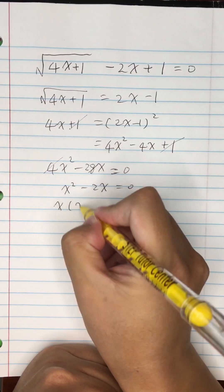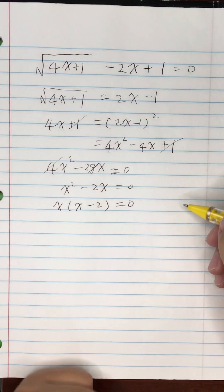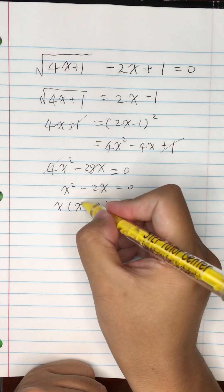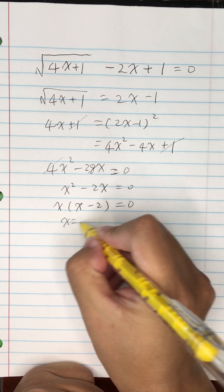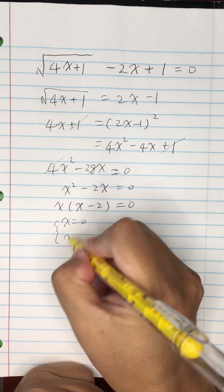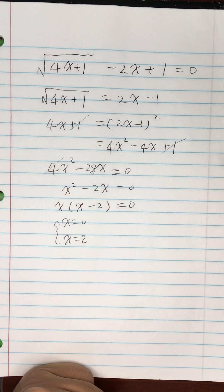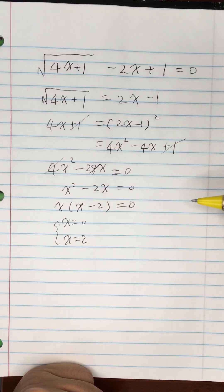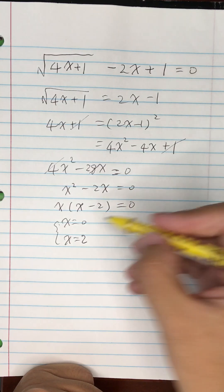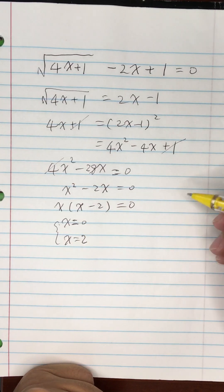We can factor out x to get x times (x subtract 2) equals 0. It appears we have two solutions: x equals 0 and x equals 2. But if you give both solutions as your answer, that's not correct — it's exactly the wrong answer.